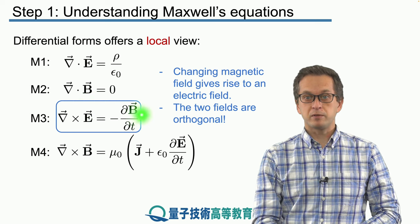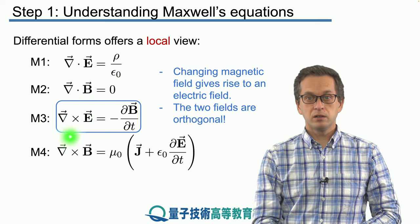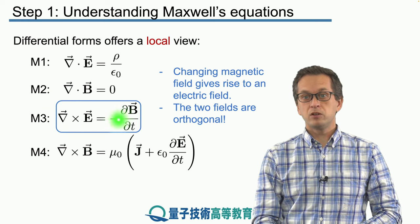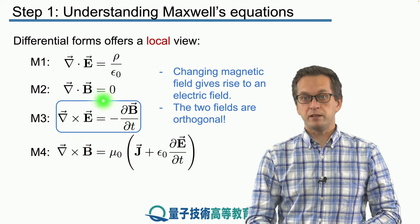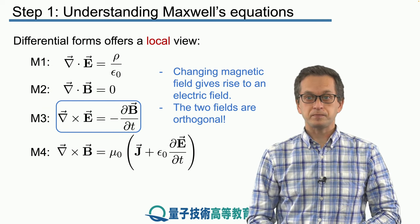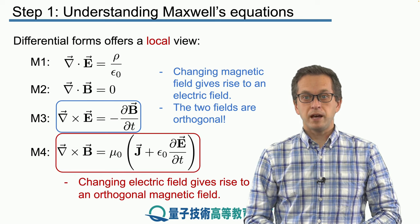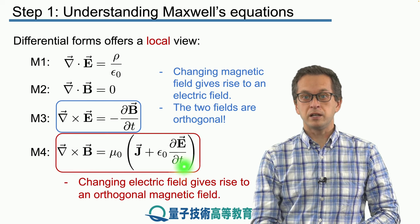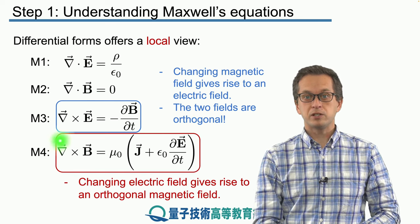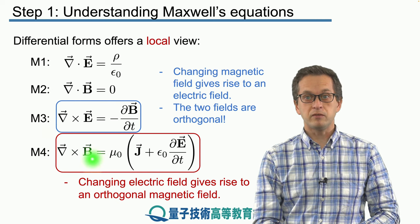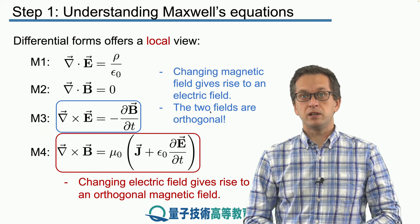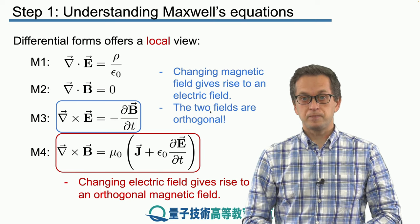Maxwell's third equation relates the curl of the electric field to the change of the magnetic field. And finally, the last Maxwell's equation tells us about the curl of the magnetic field and how that relates to the time-varying electric field.